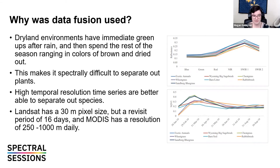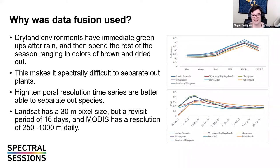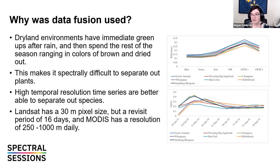Landsat has a 30-meter pixel size but a revisit period of 16 days, and would miss the features we needed. MODIS has a resolution of 250 to 1000 meters, so we wouldn't be able to see the separation between species, but it has a daily revisit. Looking at the charts: spectrally during the dry period, all the different species look exactly the same, making accurate separation nearly impossible. However, temporally in the spring, we can see major changes — some species are growing at different rates, some are much lower overall, and bare soil stays fairly static. We can use this to help delineate features.